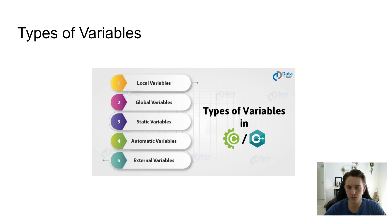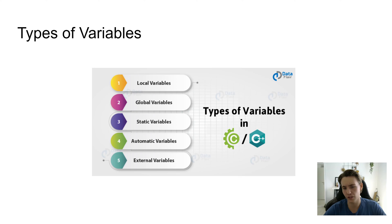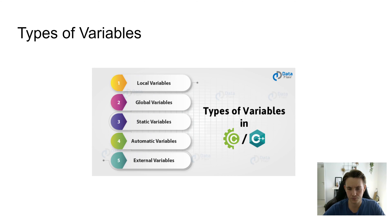Then there are static variables, which are kind of like global variables because they persist throughout the entire program. They are allocated statically in memory, meaning you can't destroy them after they've been defined — they run through the whole lifetime of the code. There are also automatic variables: an automatic variable can automatically assign a data type to itself, which is efficient when you don't need to explicitly declare it as an integer or short integer — you use the 'auto' keyword and it figures out the appropriate type for memory efficiency.